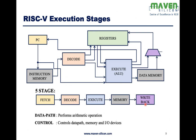So the processor does everything through five stages: it fetches the instruction, decodes what the instruction has to do, the ALU produces the result, and the result is written either to memory or the register file. There are two main components: the datapath — the logic that performs arithmetic operations — and the control logic — the logic that controls the datapath, memory, and I/O devices. This is how you can visualize a RISC-V processor.